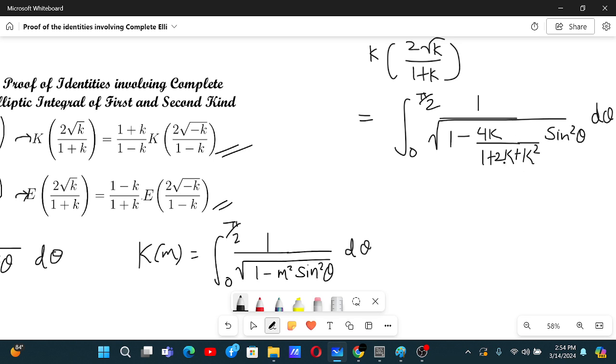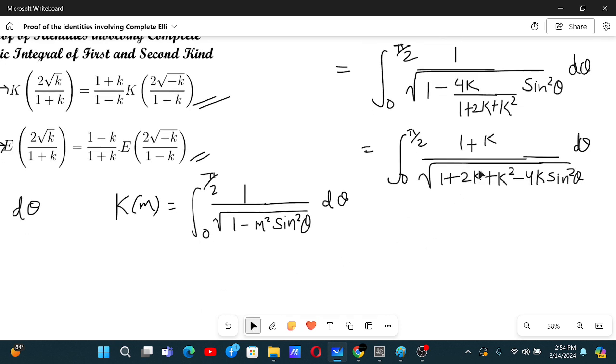Now this will go in the numerator if we take the ellipse here and that will be 1 plus k by root under 1 plus 2k plus k square minus 4k sin square theta d theta. Now seems like if we have to make here 1 minus k whole square, we need minus 2k.